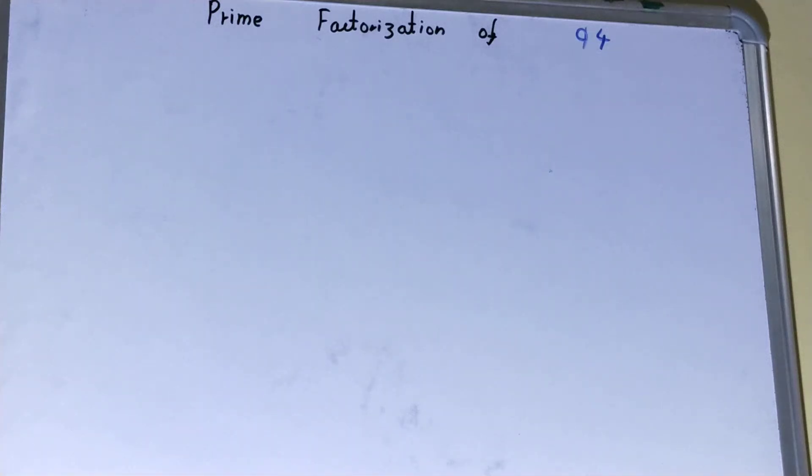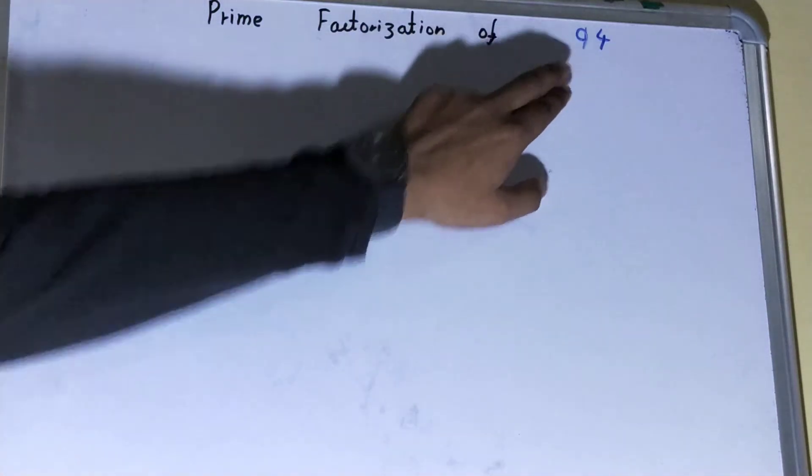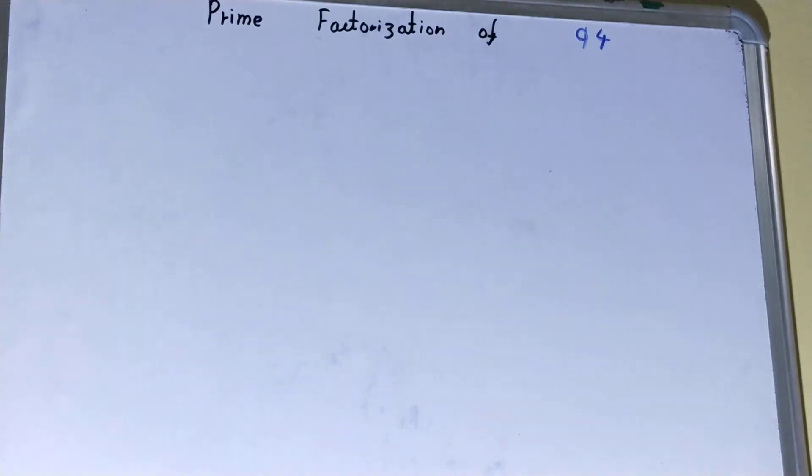Hello friends, in this video I'll be helping with the prime factorization of the number 94. So let's start. If we talk about prime factorization, it is basically factorizing the number into a group of primes or set of primes.